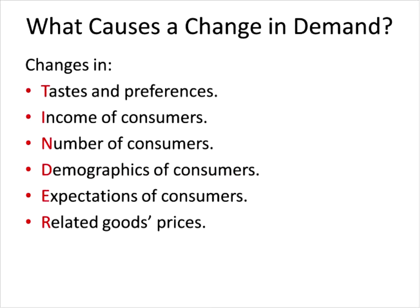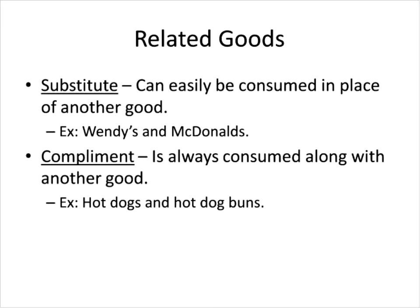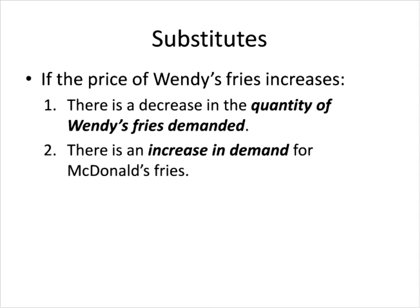The last factor, R, is the prices of related goods. The first type of related good is a substitute — if you don't have one of something, you're okay with another. Wendy's fast food and McDonald's fast food are substitutes. If the price of Wendy's French fries increases, the law of demand says people will consume fewer Wendy's fries — a movement up the demand curve for Wendy's fries. However, there will be an increase in demand for McDonald's fries, whose price didn't change, so the demand curve for McDonald's fries shifts to the right.